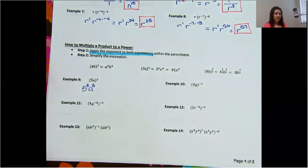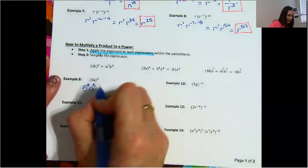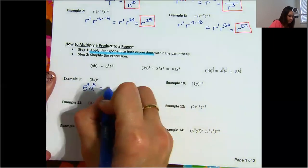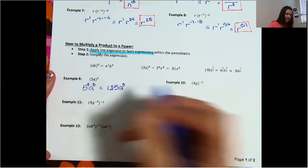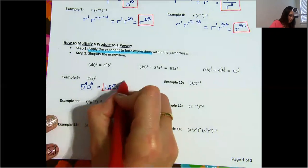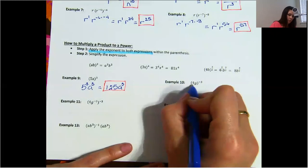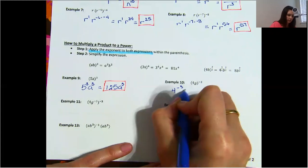We have 5 to the power of 3 and a to the power of 3. I would like for you to go ahead and simplify 5 to the power of 3. After you do so many of these, you'll start to see patterns — 5 to the power of 3 is 125 and you won't have to do that multiplication. So in this case, it's 125 times a to the power of 3. Example 10: we have 4 raised to the power of negative 3 and G raised to the power of negative 3.